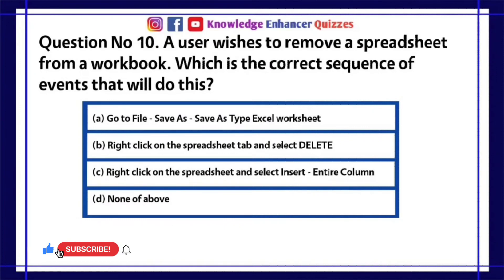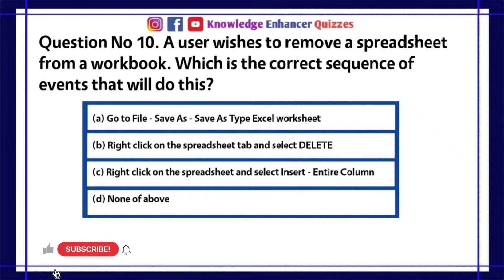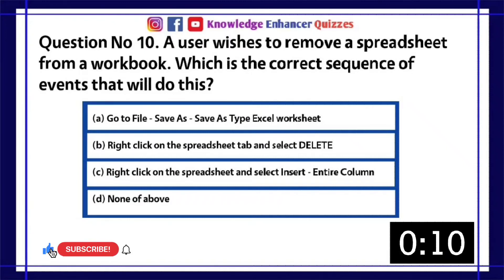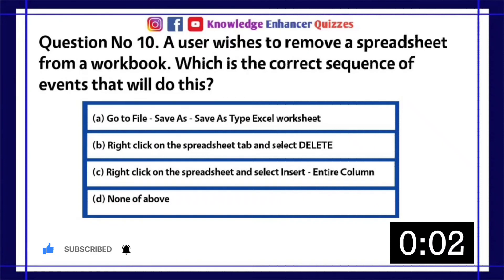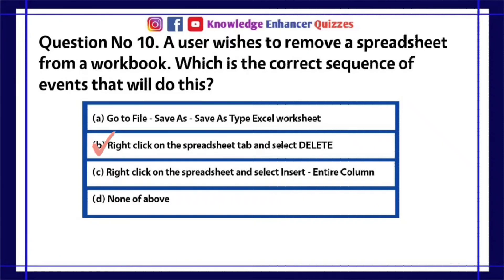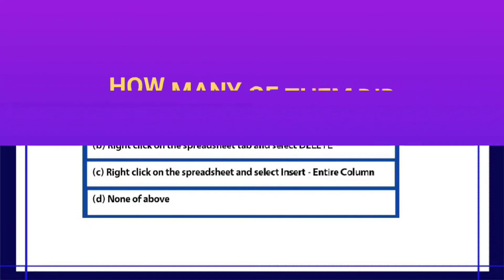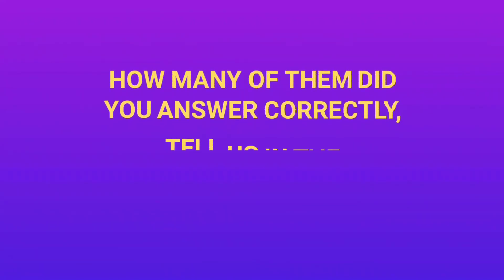Question number 10: A user wishes to remove a spreadsheet from a workbook. Which is the correct sequence of events that will do this? A. Go to File > Save As > Save as type Excel worksheet  B. Right click on the spreadsheet tab and select Delete  C. Right click on the spreadsheet and select Insert Entire Column  D. None of above. Option B is the right answer. How many of them did you answer correctly? Tell us in the comment section below.